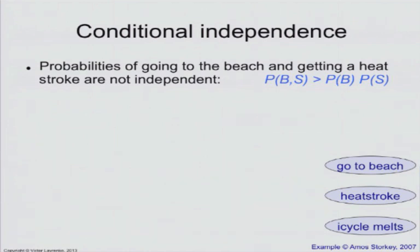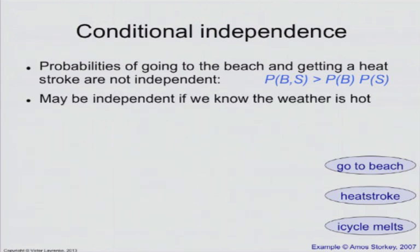Now, if you think about it, going to a beach, it correlates with getting a heat stroke, but you cannot say that it causes getting a heat stroke. What causes getting a heat stroke is hot weather. So if I know that the weather is hot, that does two things. First of all, it explains that if the weather is hot, that increases the chance that I will go to a beach. It also increases the chance that I will get a heat stroke. Because I could go to a beach in Scotland, and it's very unlikely that you'd get a heat stroke. So really, the factor that explains both of these events is whether or not the weather is hot today.